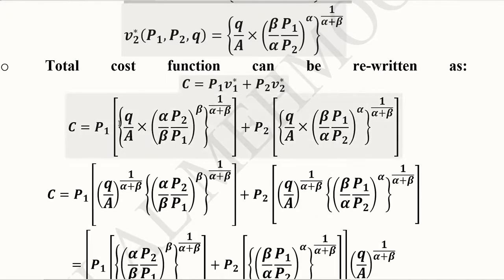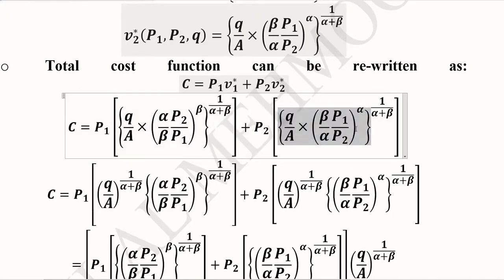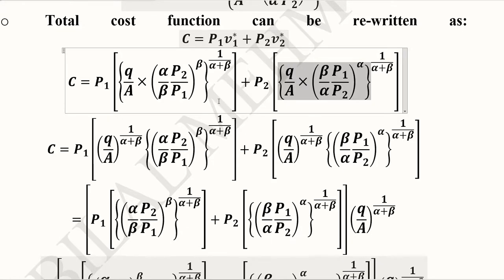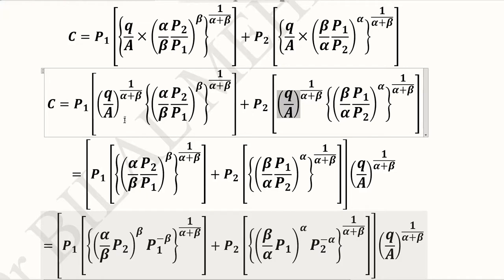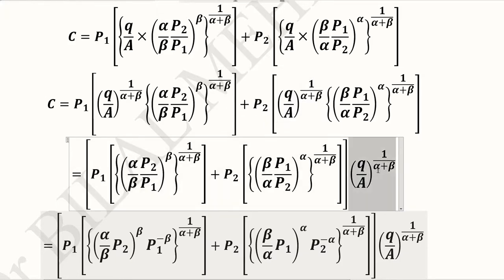Putting the values of v1* and v2*, we get these terms in the square brackets. Now we do the simplification process where we are trying to separate q over A with its own power — here as well as here, the power has been distributed to q over A. After this distribution, we know that they are the same terms before and after the plus sign, so we can take it as a common factor written at the end.